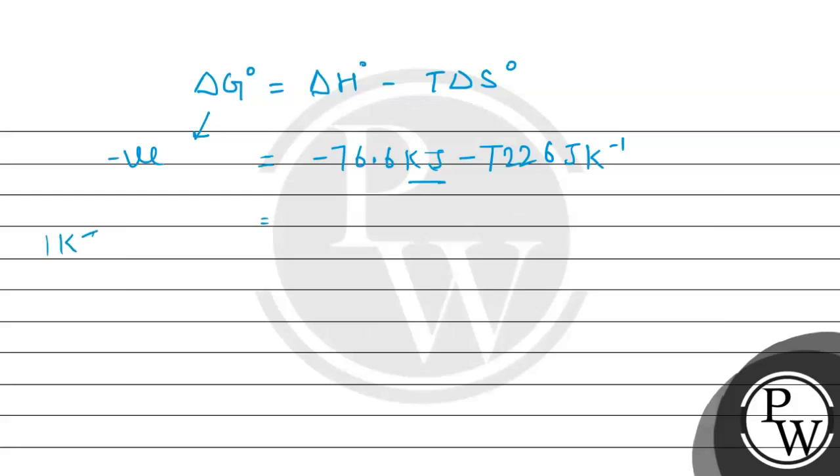In 1 kilojoule, we have 10³ joules. So here we can write -76.6 × 10³ joules.